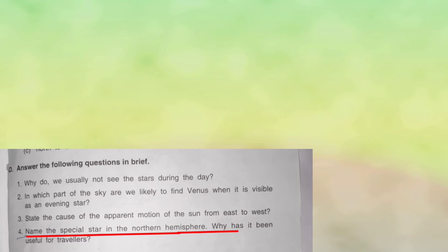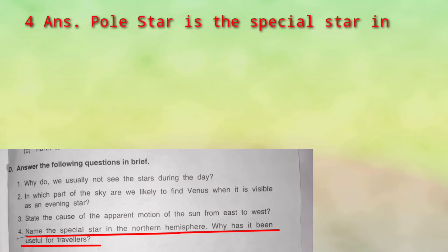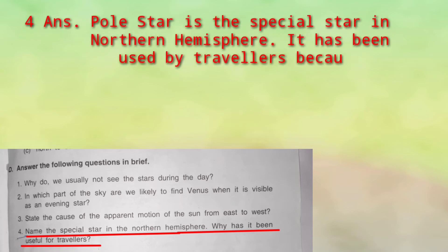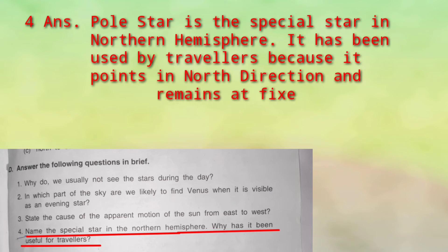Next: name the special star in the northern hemisphere. Northern hemisphere mein kaunsa special star hai, uska naam humein batana hai, aur travelers ke liye itna useful kyun raha pehle ke time pe? The special star is the Pole Star — Dhruv Tara — jo bohut important hai.